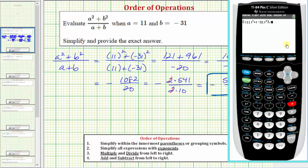Divided by open parenthesis for the denominator, and then we have 11 plus negative 31, closed parenthesis for the denominator, and enter. Notice how it's giving us the exact value as a terminating decimal. So our fraction is equal to negative 54 and one tenth, or negative 54.1 as a decimal.